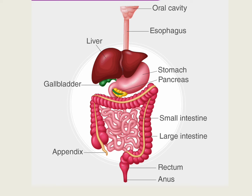The esophagus and anal canal are merely transport passages. The part of the alimentary canal from the stomach to the rectum is the proper digestive tract, and it is responsible for the digestion and absorption of food. Reabsorption of secretions is an important function of the large intestine.